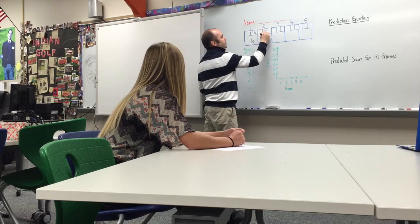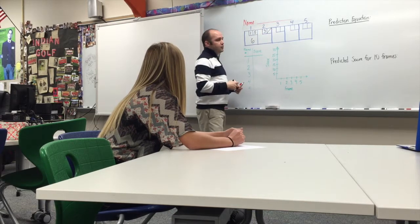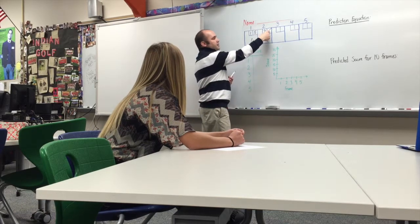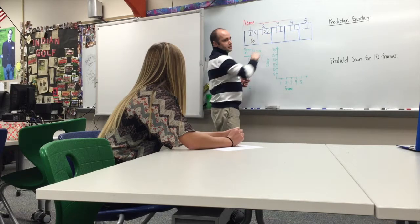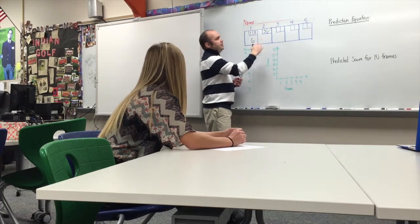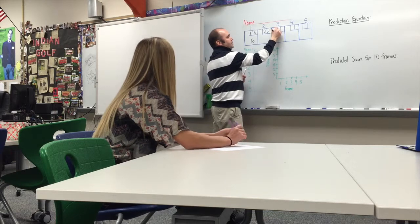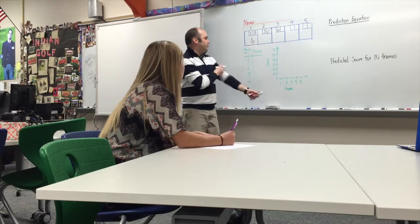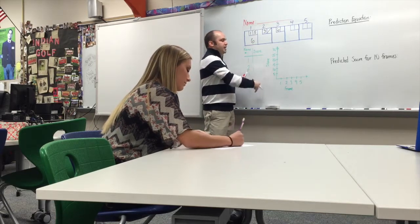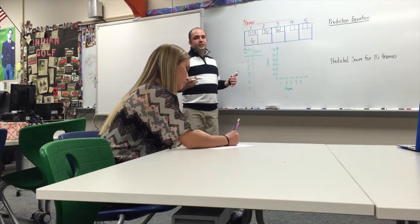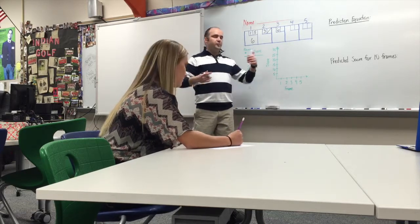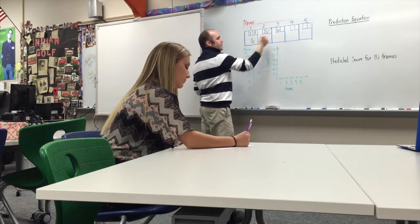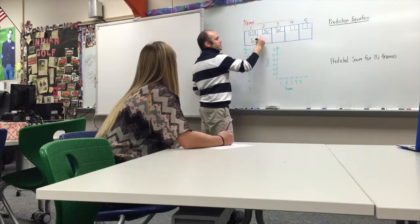Say next one you get three and then you get a spare. The way you add that is you take the six plus three, which gives you nine, but since you have a spare, your spare is going to count like your next score. So we can't put our total in here yet. Say you get a six, so to get your total for this frame — and you want to write these down because we're going to plot these points — we're going to add these together. So we get 16 plus six gives us 22.